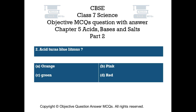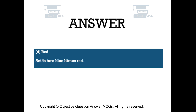Question number 2. Acid turns blue litmus — Option A: orange. Option B: pink. Option C: green. Option D: red. The right answer is option D — red. Acids turn blue litmus red.